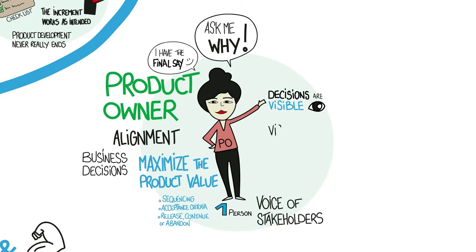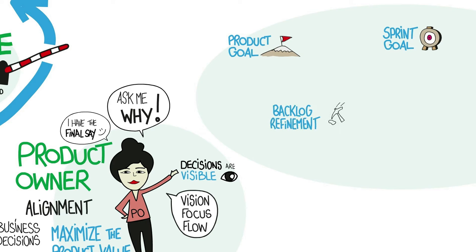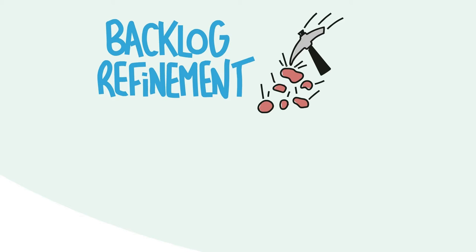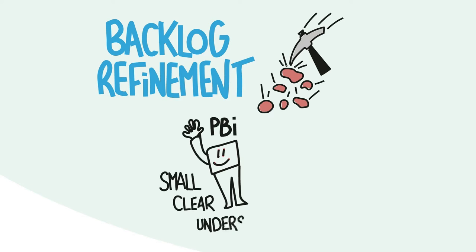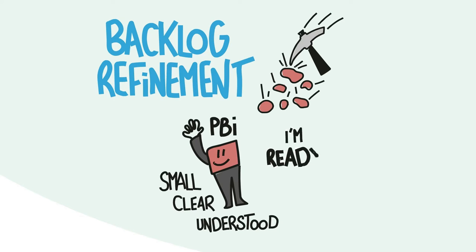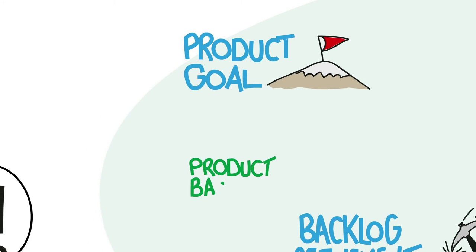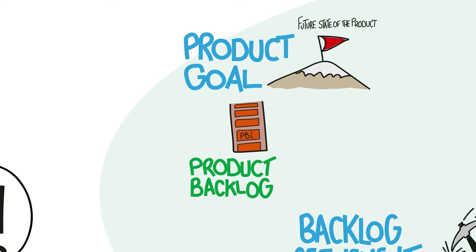Traditionally, the product owner's mission has been summarized in three words: vision, focus, and flow. Scrum represents these concepts through the product goal, the sprint goal, and backlog refinement. Backlog refinement is the process of making the most important backlog items transparent, visible, understood, and small. Backlog items that are small enough to be completed in a sprint are considered ready. The whole team is involved, stakeholders can be invited, and the product owner is accountable. The product goal describes a future state of the product, and the rest of the product backlog emerges to define what will fulfill the product goal.